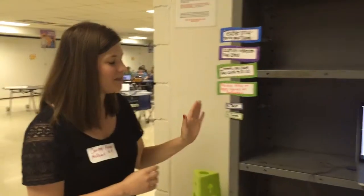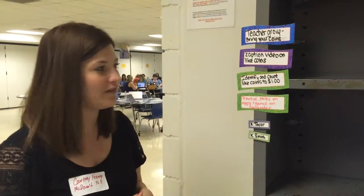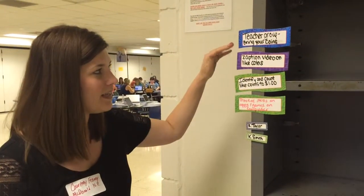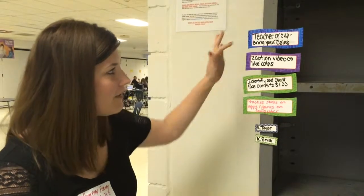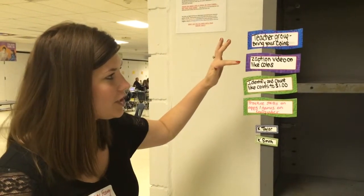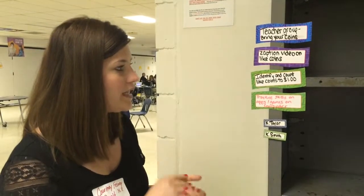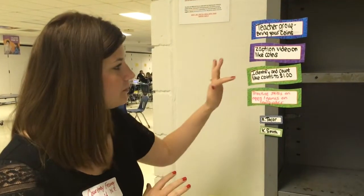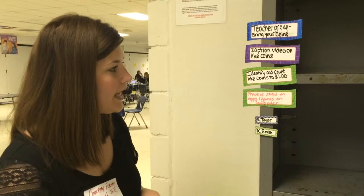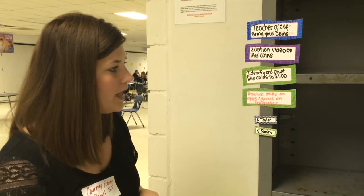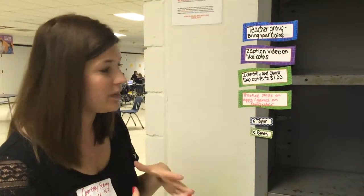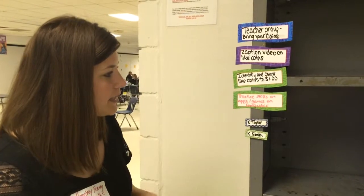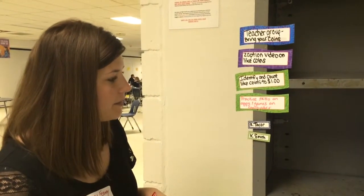This is our low group — they are below grade level, so they are starting at the base. The teacher group is going to have them bring their coins and work on counting like coins only to a dollar. After the teacher group, they'll watch a Zaption video identifying coins and then stop-count. They would then move on to identify and count like coins to a dollar in a partner or group game, and finally practice their skills on apps and games on the computer.